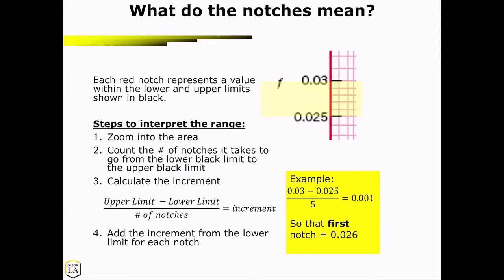So in this particular example, we are looking at friction factors. So that's our left y-axis. We're ranging from 0.025 to 0.03. The number of notches in between is 1, 2, 3, 4, 5.